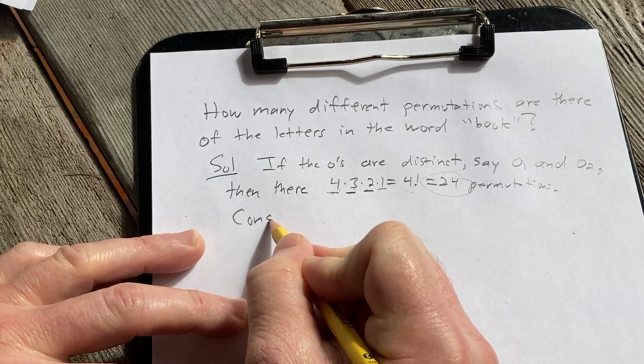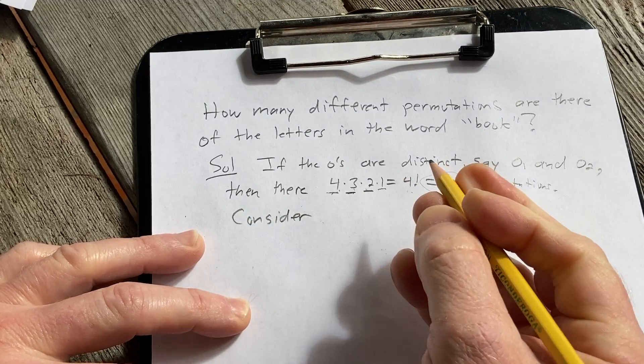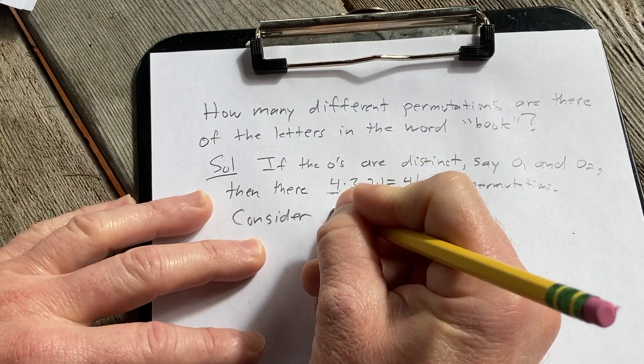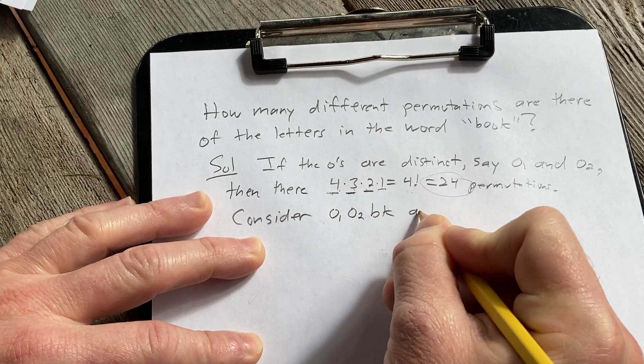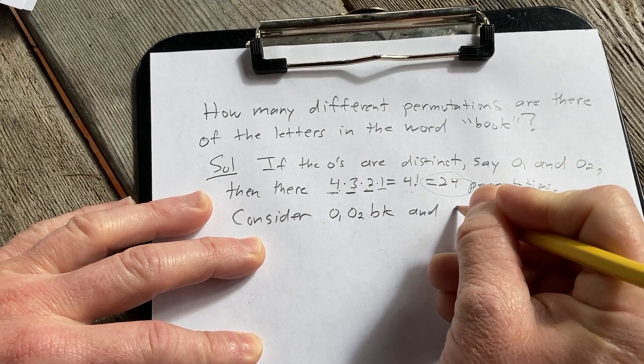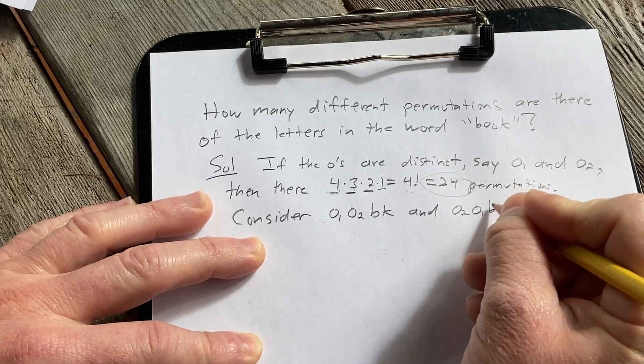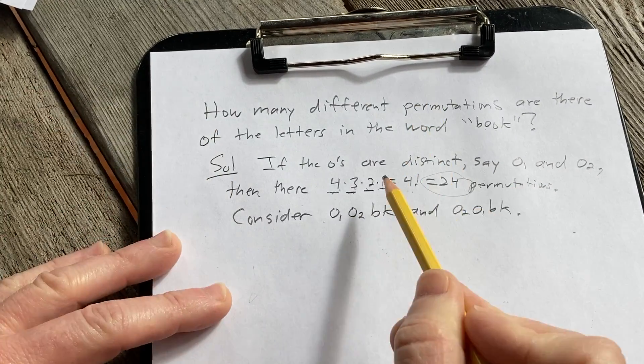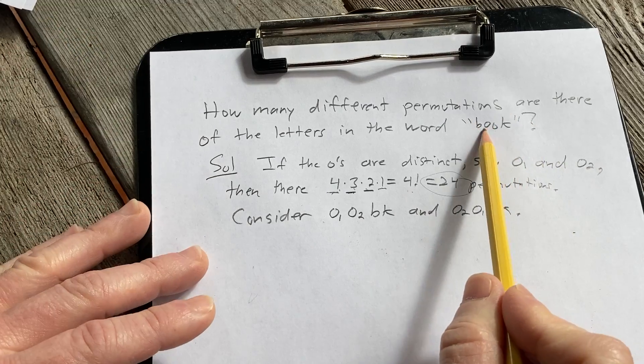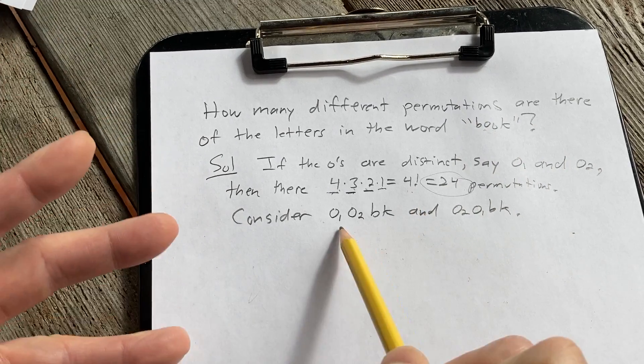Okay, so now just for a moment consider two particular permutations: O1, O2, BK, and also O2, O1, BK. These are considered distinct under our pretend status. Because again, the O's are actually the same, but if we pretend they're different, these would be considered two different permutations.